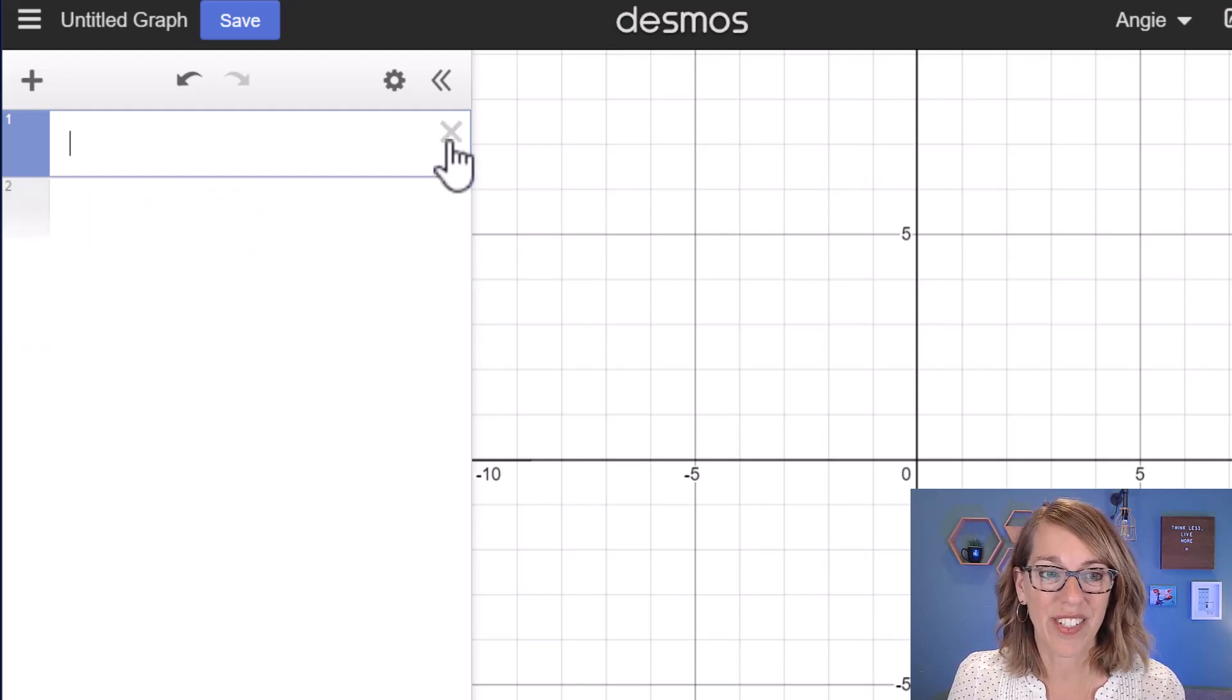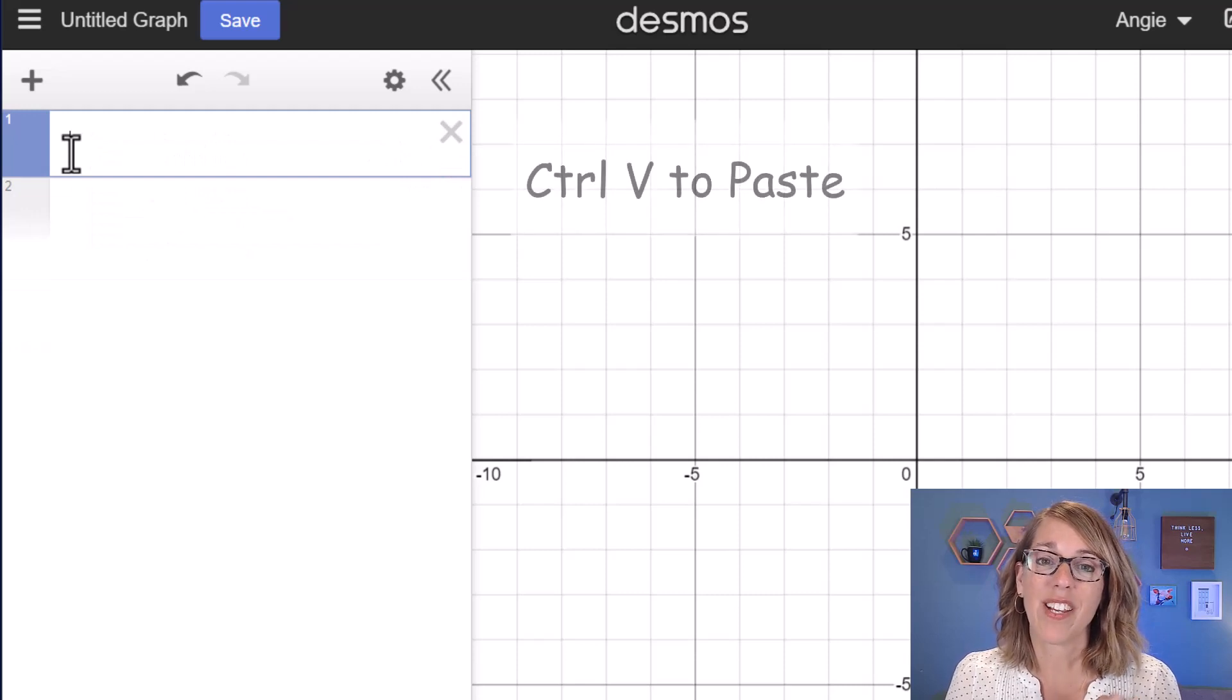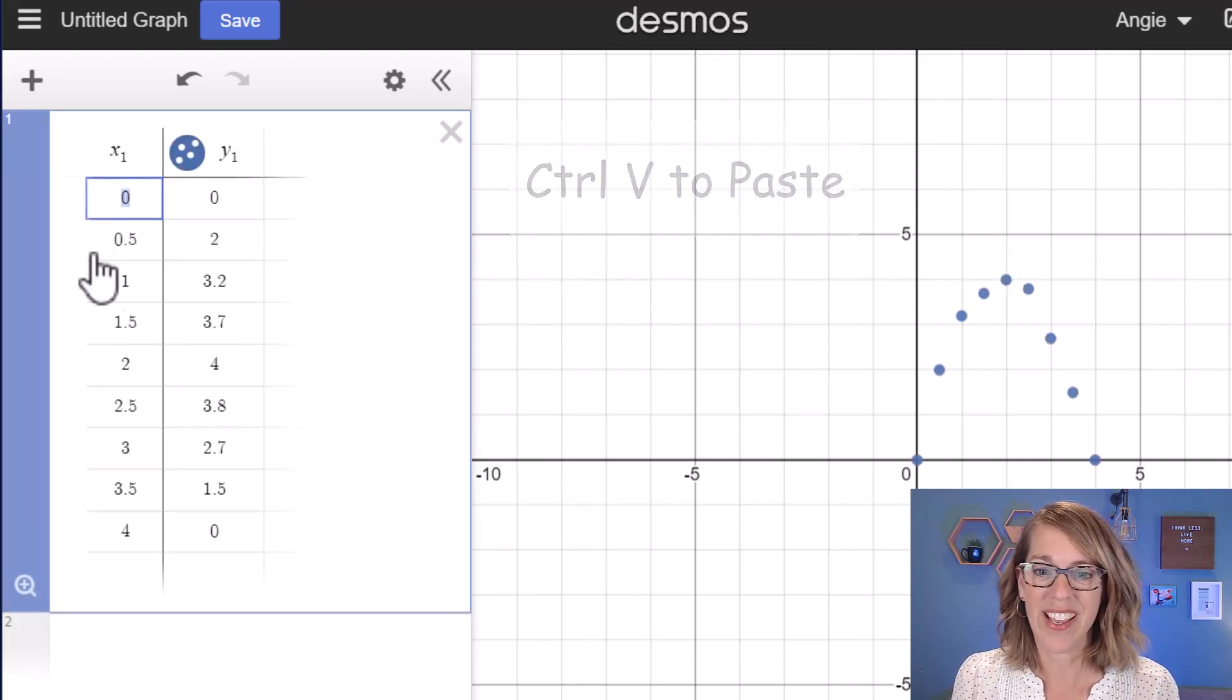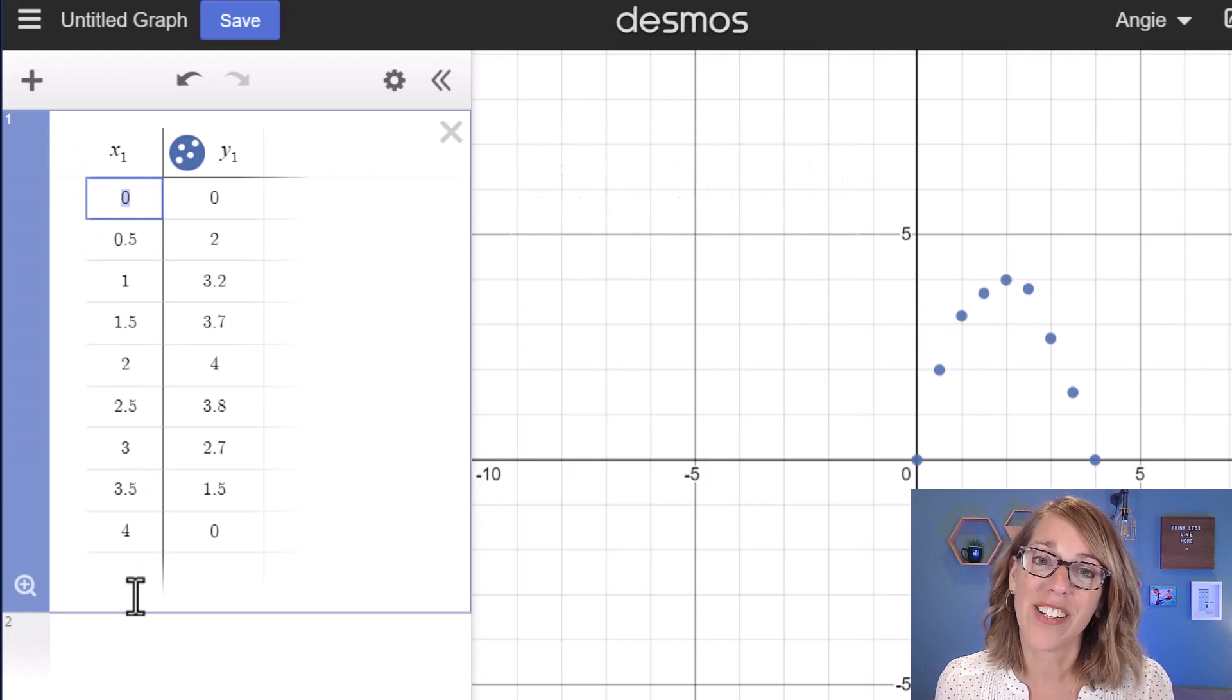Let's go ahead and close this back to an empty cell, and I'm going to hit Ctrl+V, V as in Victor, to paste. So Ctrl+V, and it does such a great job and puts it right into the table and plots those points.